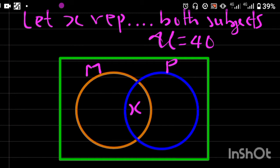The question says 32 offer mathematics. So inside mathematics alone, it's going to be 32 minus X.